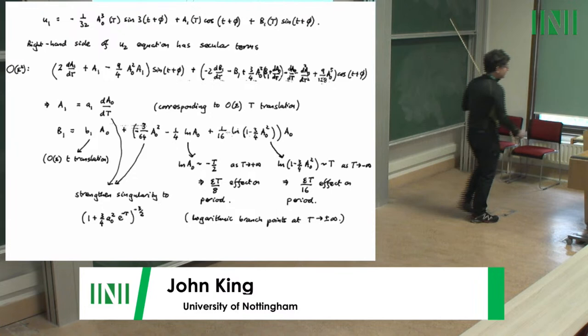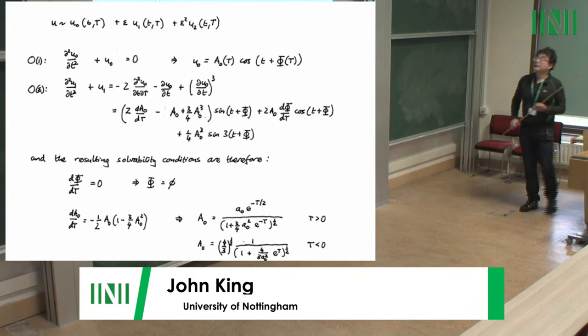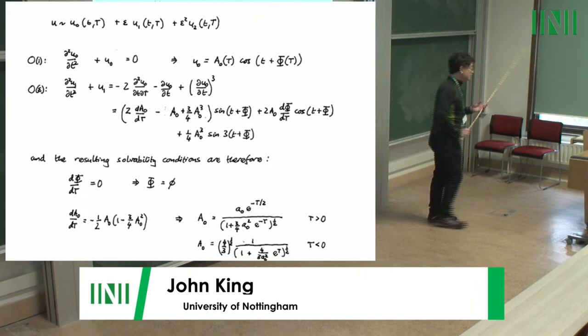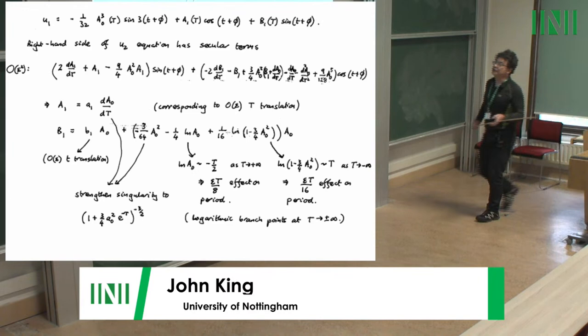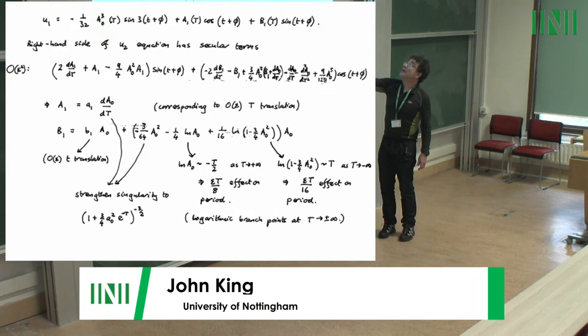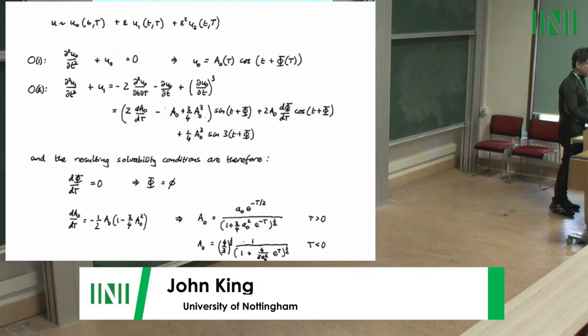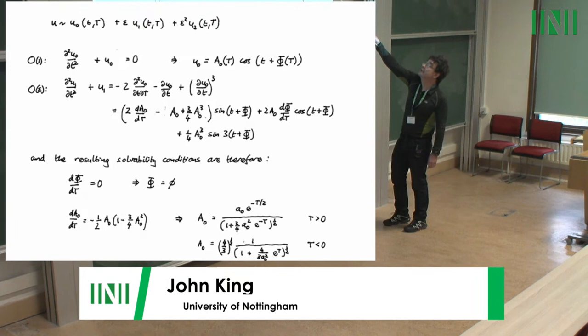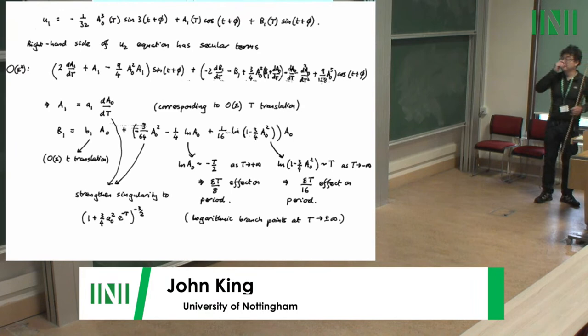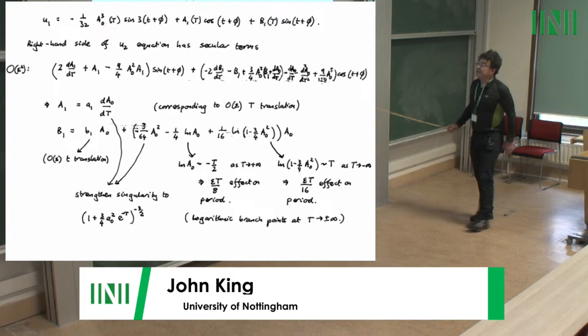The solution for a-1 is proportional to da-naught/dT times cos(t): if you perturb the time origin of big T slightly and do a Taylor expansion, that's exactly what you get. The solution for b-1 multiplies sine(t) with factor a-naught itself — perturbing little t by a small translation and Taylor expanding gives sine(t) times a-naught. So both supposed continuous symmetries are explicitly showing up as you take the expansion to higher and higher orders.